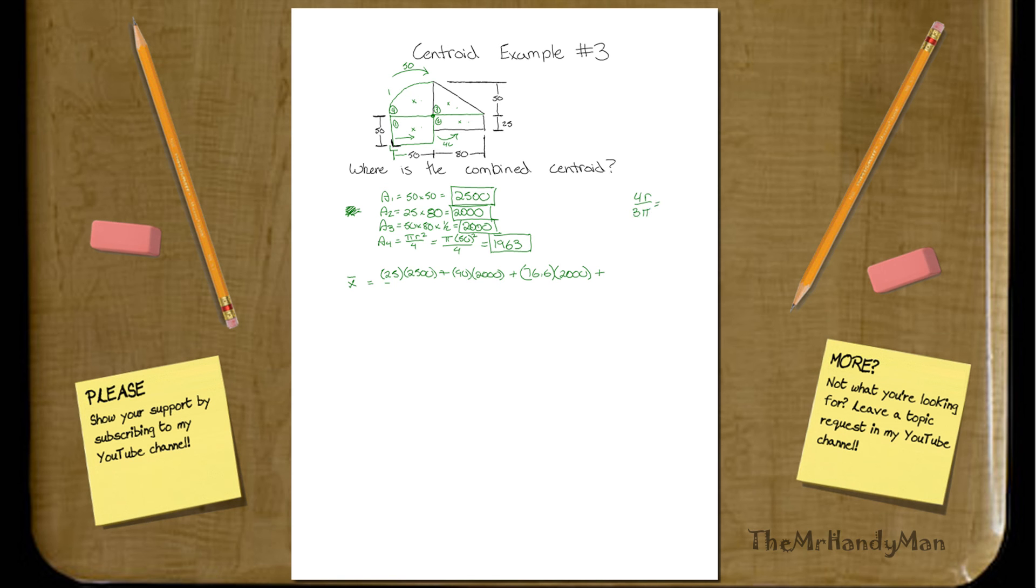Which, for our shape, is going to be 4 times 50, divided by 3, and divided by pi, right? Which, that is 21.2. But, mind you, that that is the distance, if we were to cut it out, that's this distance. That's 21.2.